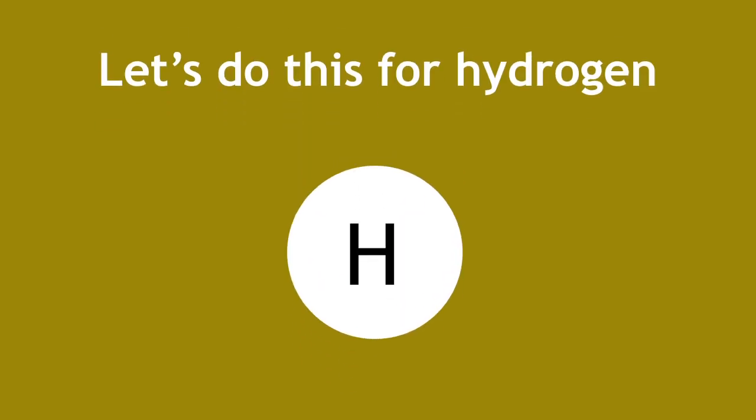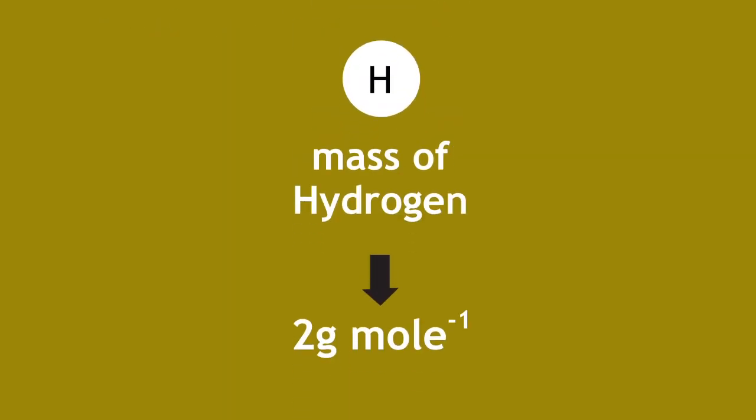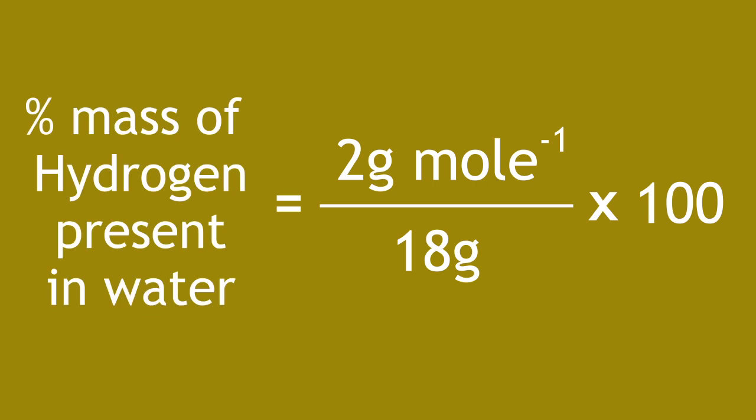Let's do this for hydrogen first. The mass of hydrogen present was 2g per mole. So, if you divide this by 18g and multiply this by 100, you get the percentage mass of hydrogen present in water. Pause the video and work out the answer for yourself.